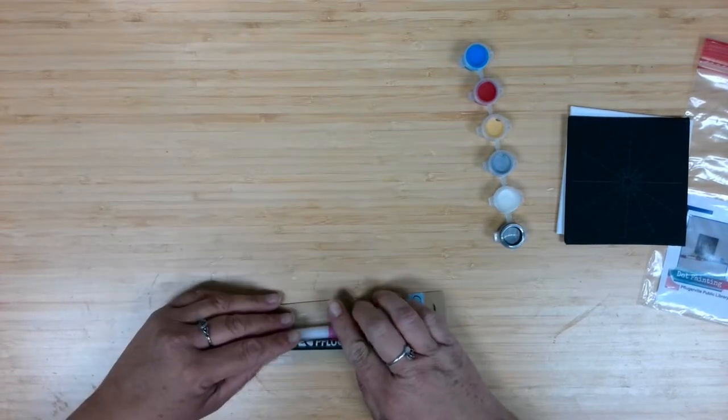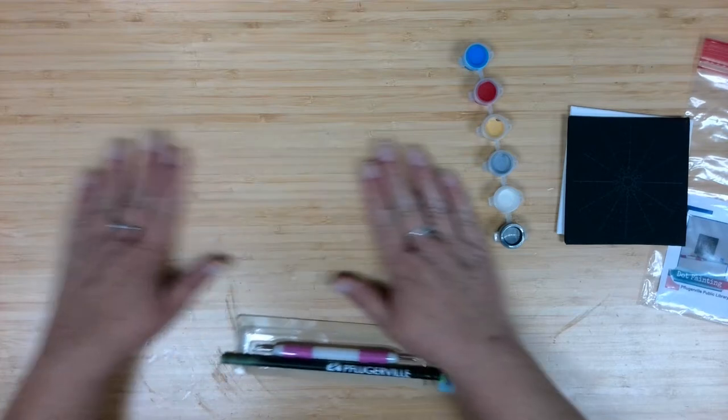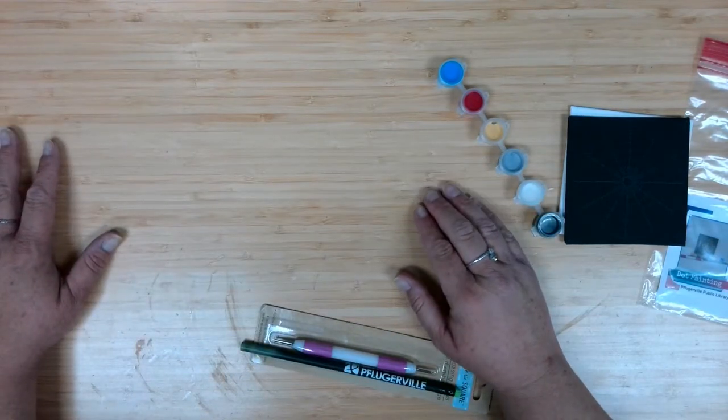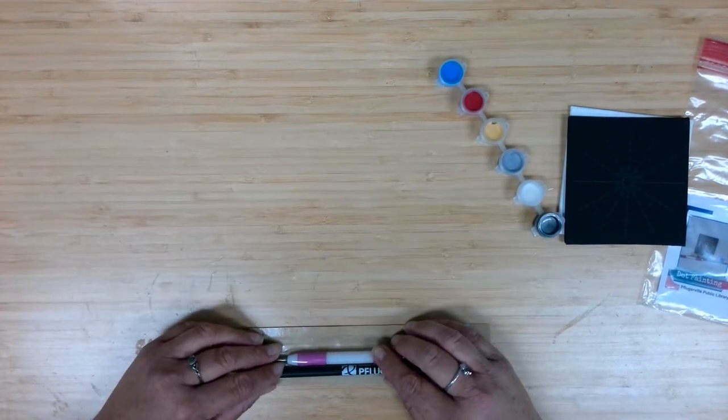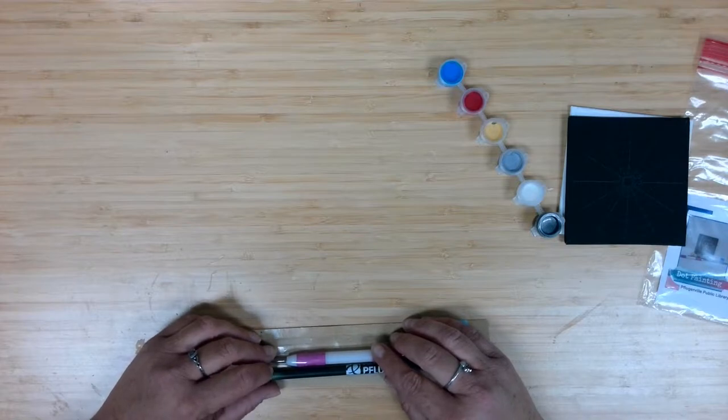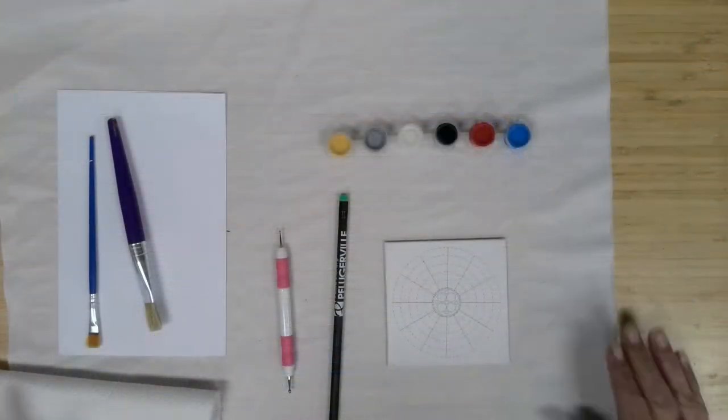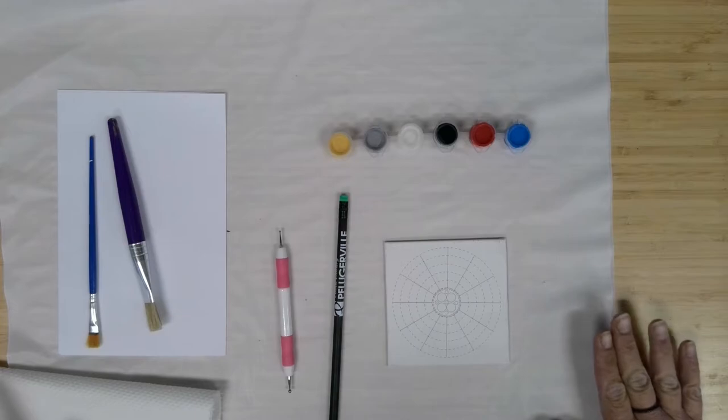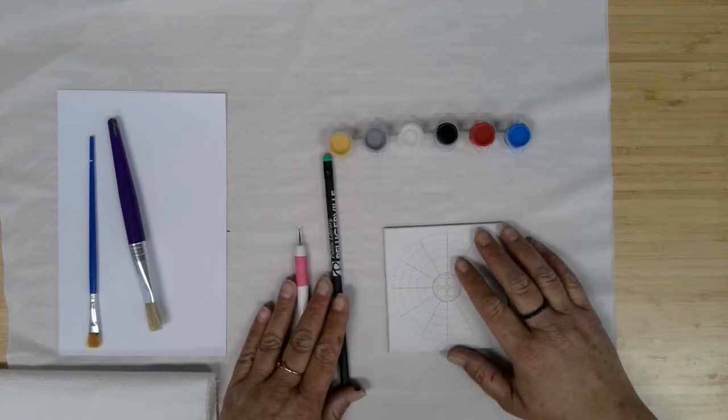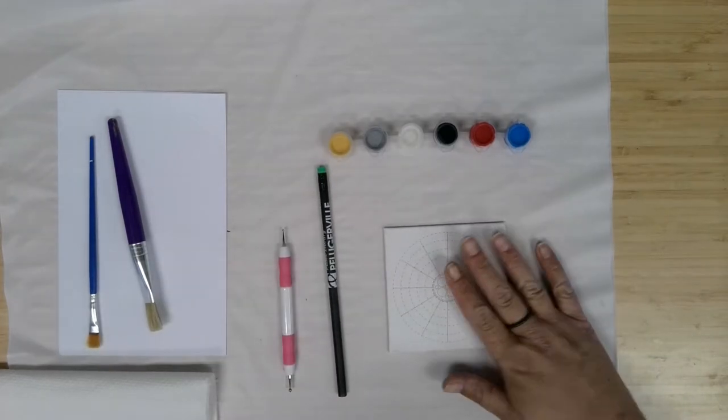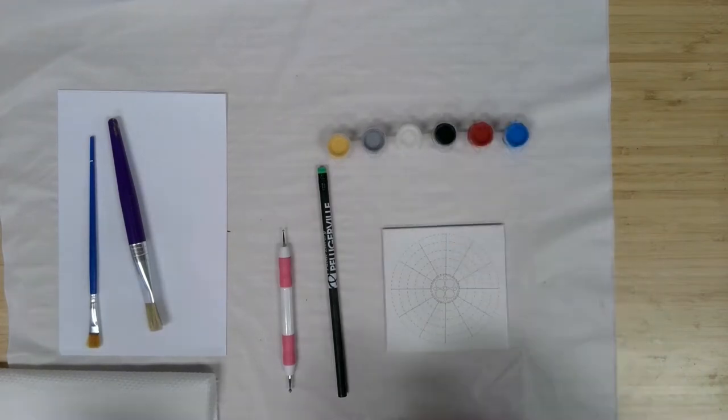The next thing in order to get ready for our craft, I'm going to go ahead and put something down to protect the workspace from paint. And we will get started on this dot painting canvas project. Okay, so I've got my workspace protected. I've got my supplies out, the embossing tool, the pencil, one of my canvases, as well as the paints.